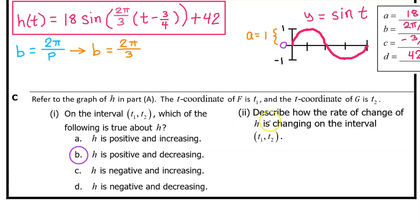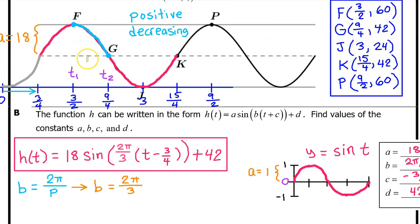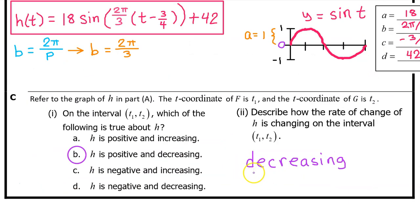C part two. Describe how the rate of change of h is changing on the interval from t1 to t2. In unit one, we learned that when h of t is concave up, the rate of change is increasing. And when h of t is concave down, the rate of change is decreasing. On the interval from t1 to t2, h of t is concave down. Therefore, the rate of change is decreasing. They did not ask us to justify our answer, so it's safest to give a one word response. Just say decreasing.